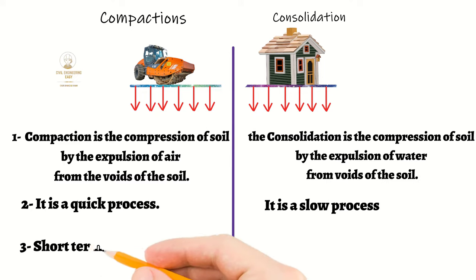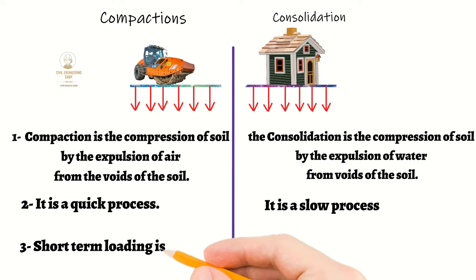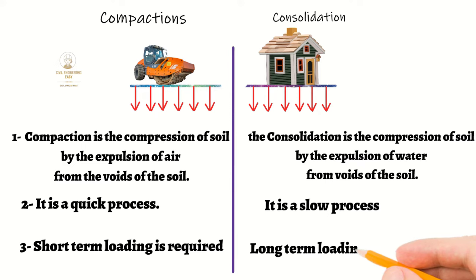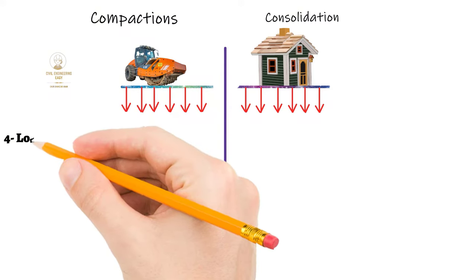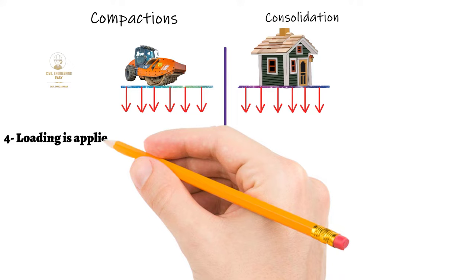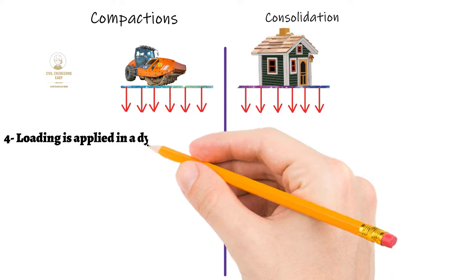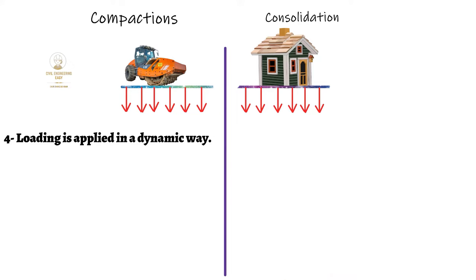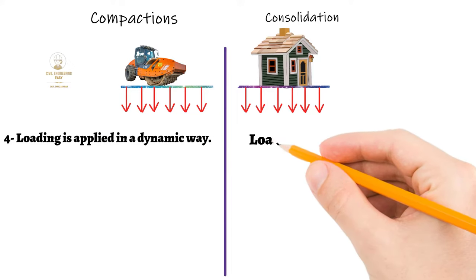Compaction is a quick process, while consolidation is a slow process. Short-term loading is required for the compaction process, while for consolidation, long-term loading is required. Loading is applied in a dynamic way for compaction, with the help of different types of rollers.